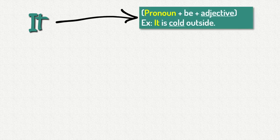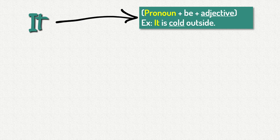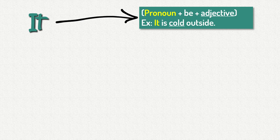It is a pronoun and is followed by the verb to be and an adjective, like in this example. It is cold outside. Cold is the adjective.